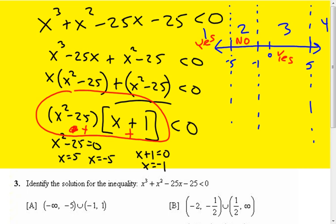So my solutions are x is less than negative 5 and x's that are between negative 1 and 5. So it's going to look like that.